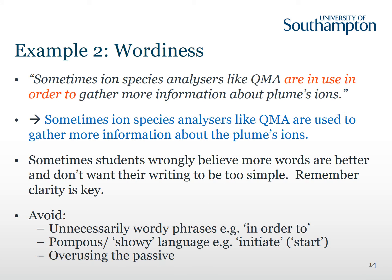The next example has problems of wordiness — 'are in use in order to' — which could simply be rephrased as 'are used to'. This might not seem like a big deal, but if you're looking at a piece of writing of thousands of words, this kind of wordiness is like an irritating background noise that makes it harder for the reader to process what you're saying. Sometimes students believe that the more words they use the better it sounds and they don't want their writing to be too simple. However, clarity is the key and you don't want to reach a word limit by waffling — you want to get there by covering important points. It's important to avoid unnecessarily wordy phrases such as 'in order to', which could simply be written as 'to'.